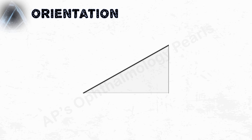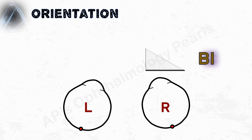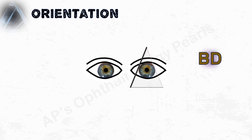The orientation of a prism is always denoted by the direction of its base with respect to the eye in front of which it is placed. So this is a base-out prism, this is a base-in prism, this is base-out, this is base-in, this is base-up, and this is base-down.